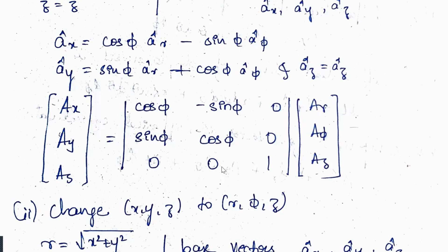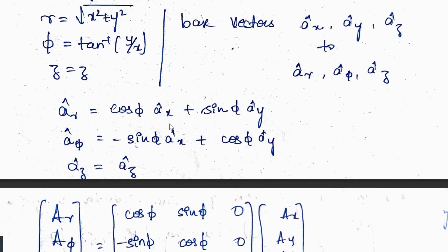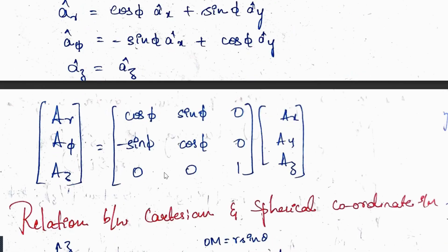For the reverse — converting Cartesian to cylindrical — find r = √(x²+y²), φ = tan⁻¹(y/x), z = z. The base vectors transform as: âr = cosφ·âx + sinφ·ây, âφ = −sinφ·âx + cosφ·ây, âz = âz. Solve the resulting matrix to obtain the cylindrical form.